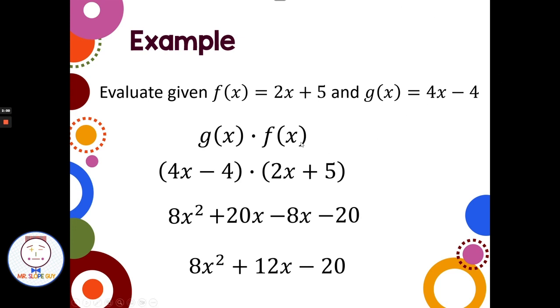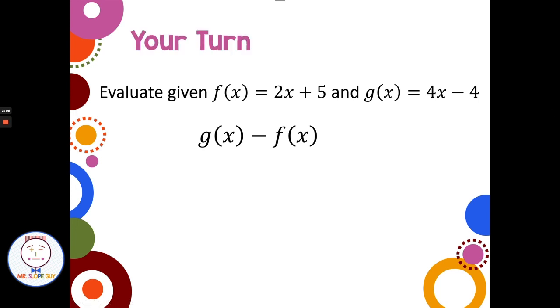So we're looking at this operation sign. We have this little dot that was in between them that told us we were going to multiply. Now, I want you guys to pause the video here, and I want you to find g(x) minus f(x). So this one is subtraction. So guys, go ahead, try to subtract those two polynomials. Pause the video here. Come back and see how you did.